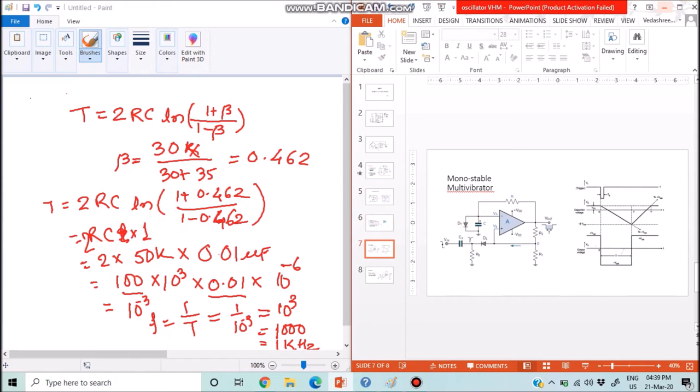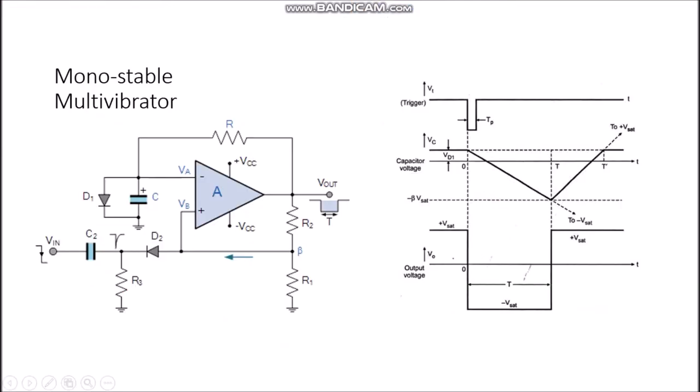Now let us move to the next topic: the monostable multivibrator. In a monostable multivibrator there is one stable state and one quasi-stable state. The stable state of this circuit is at plus Vsat. Unlike the astable multivibrator which has no input, here one input is applied — a negative trigger. The circuit is very similar to the astable one; the only difference is one input is given, which is a negative pulse applied to an RC differentiator combination, producing positive and negative spikes. Due to the diode, only the negative peak passes through.